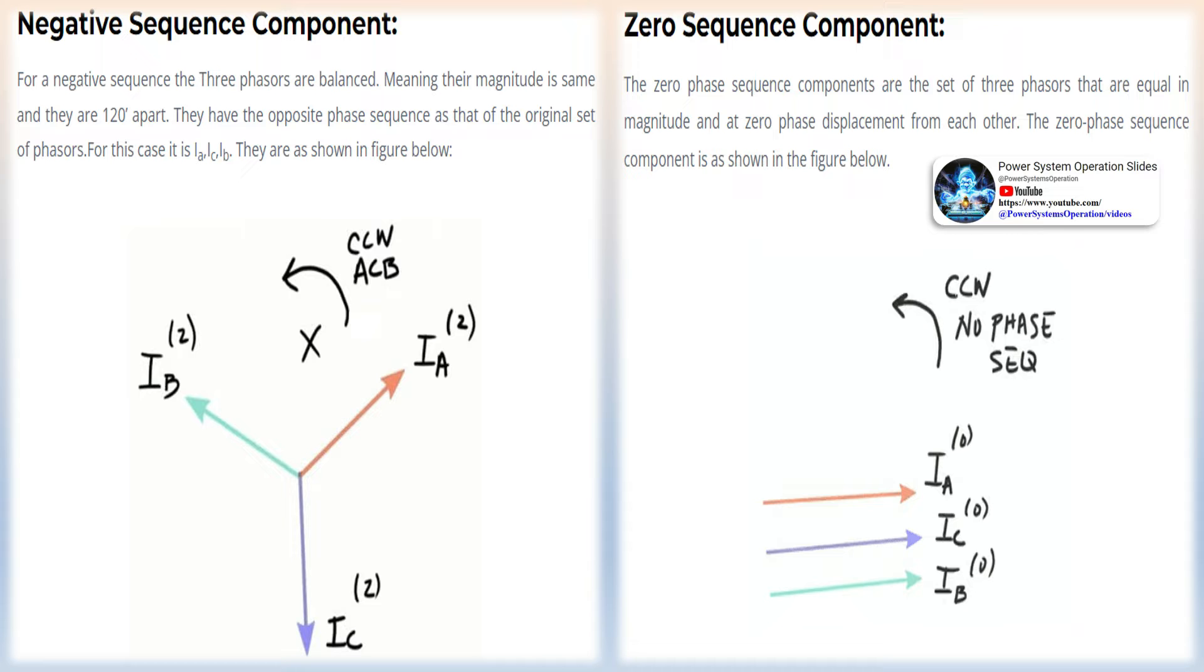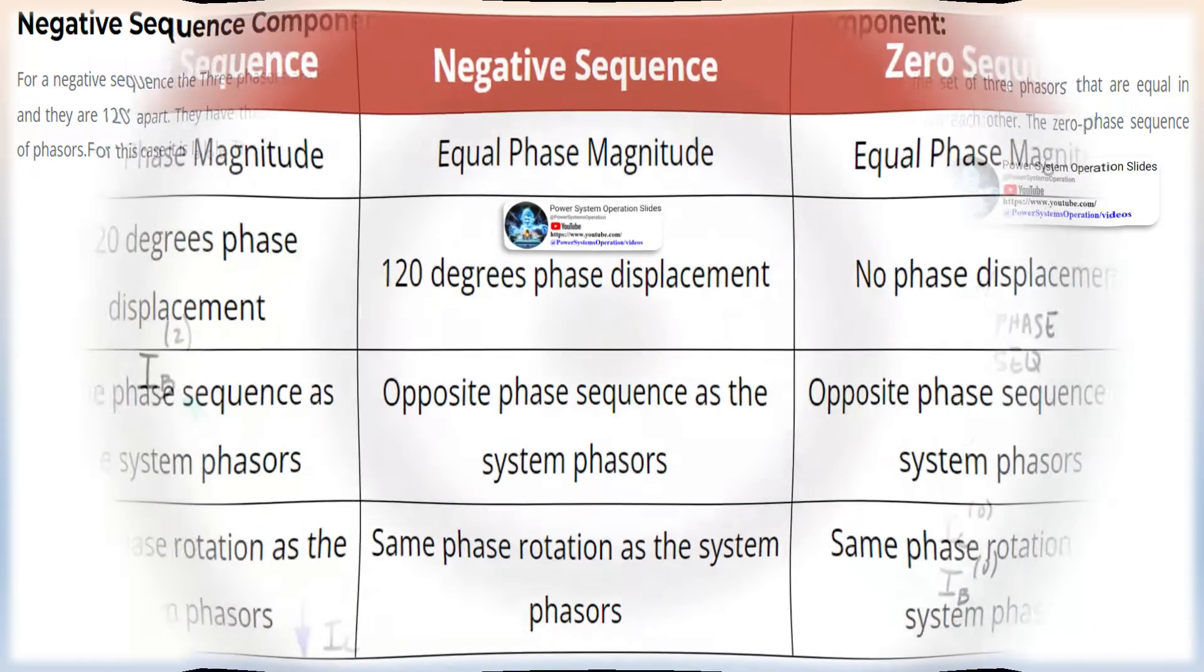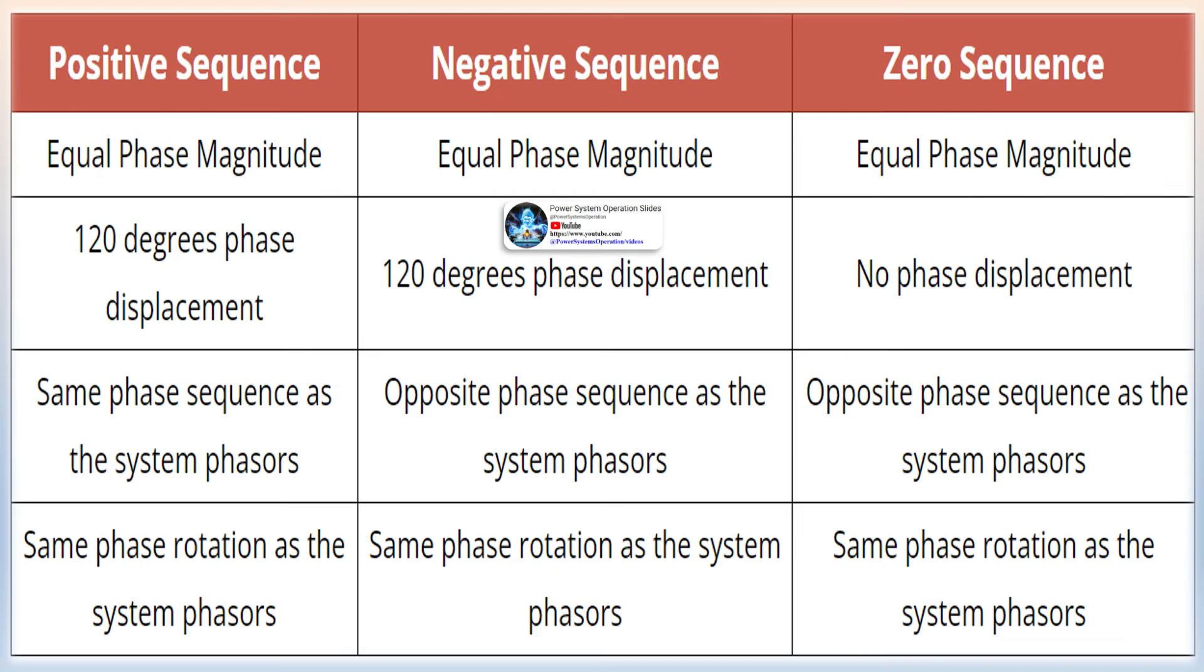the voltages, currents, and phase impedances are no longer equal. This poses a challenge for analysis and troubleshooting. To tackle this complexity, engineers employ a powerful technique known as the method of symmetrical components.